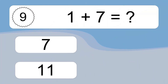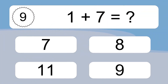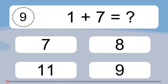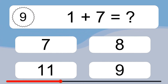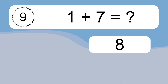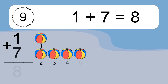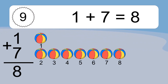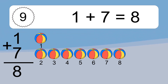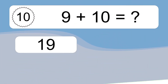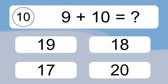1 plus 7 equals what? 1 plus 7 equals 8. Let's count it: 1, 2, 3, 4, 5, 6, 7, 8.